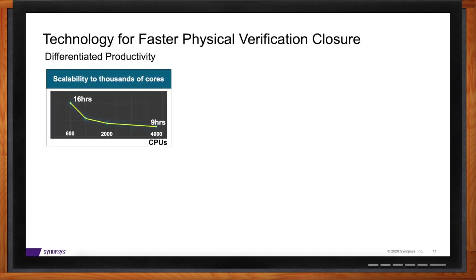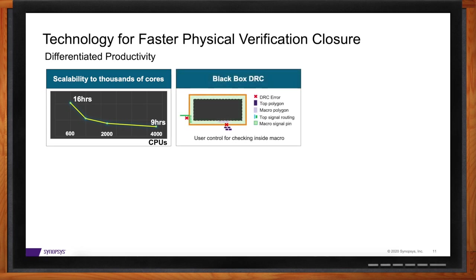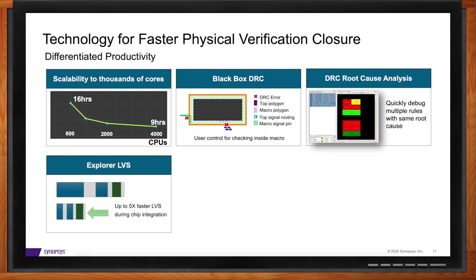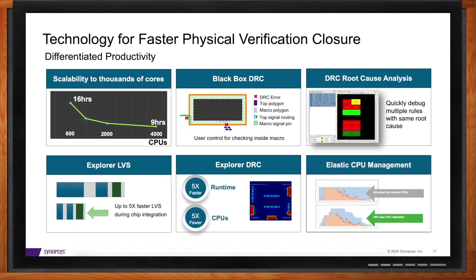In closing, designs today have become extremely complex and closing physical verification on time is a huge challenge. With ICV, we focus on full flow productivity to accelerate closure. Key technologies include: scalability to more than 4,000 cores for faster sign-off within hours; Elastic CPU technology for launching jobs quickly while saving 40 percent of resources; Explorer DRC, Explorer LVS, and Black Box DRC for chip integration productivity; and ML technology to help users debug and root cause issues quickly. All of these technologies together address full flow productivity and help converge on sign-off faster.